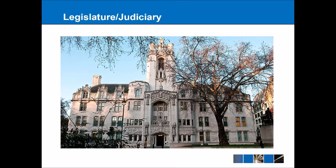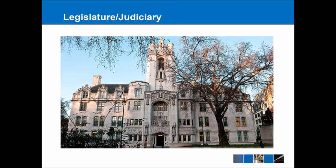The final connection to look at is between the legislature and the judiciary. Previously, the House of Lords — the highest court in the country — existed within the parliament building. As part of the reforms from the Constitutional Reform Act 2005, it was decided that the highest court should have its own separate building. This is Middlesex Guildhall, opposite parliament, which gave birth to the Supreme Court in 2009 — now the highest court in the UK. So we do have greater physical separation between the legislature and the judiciary now.